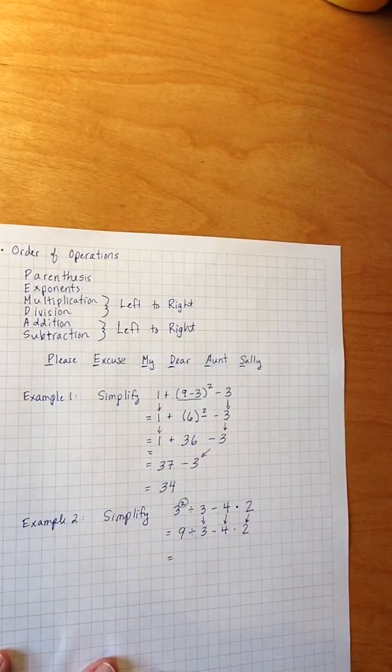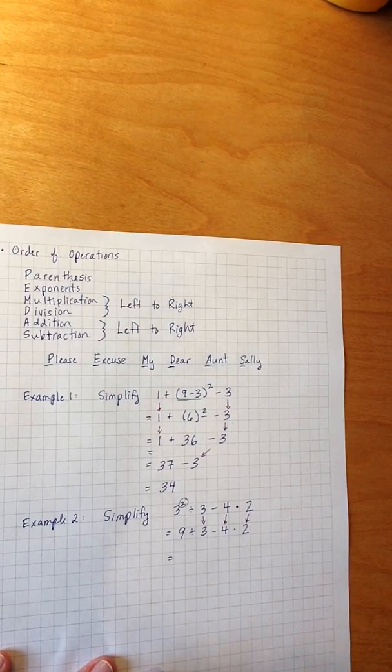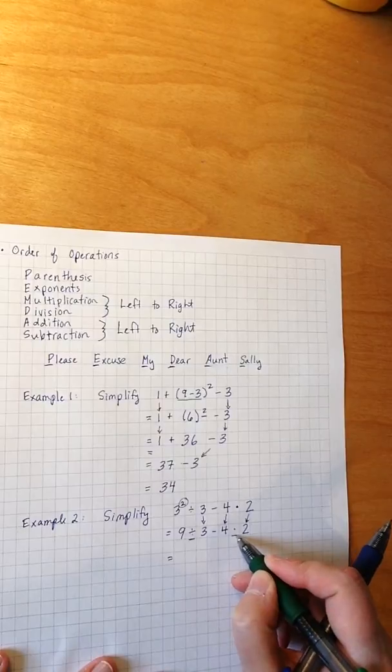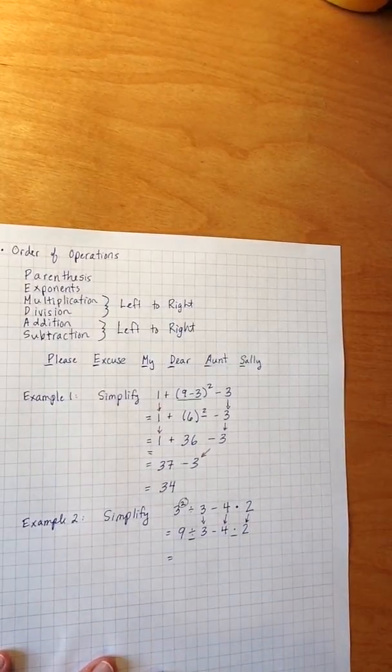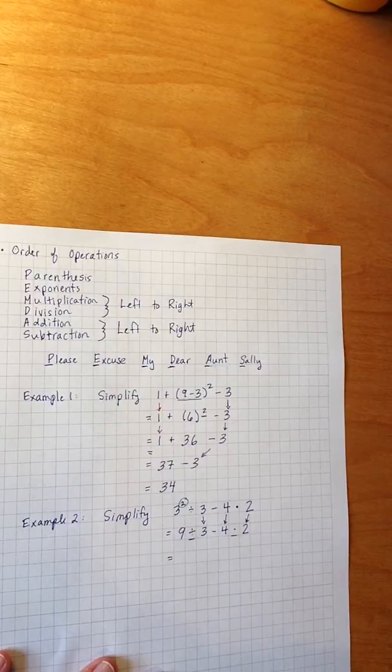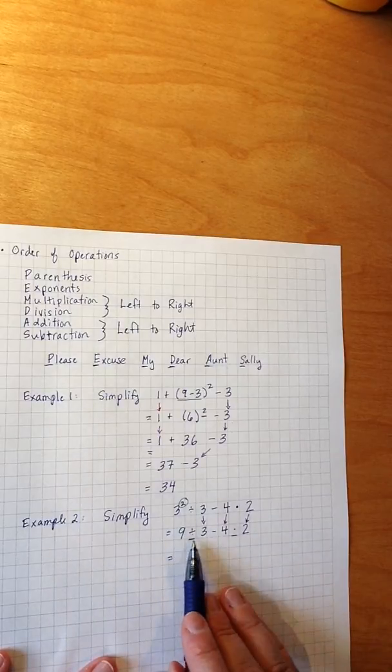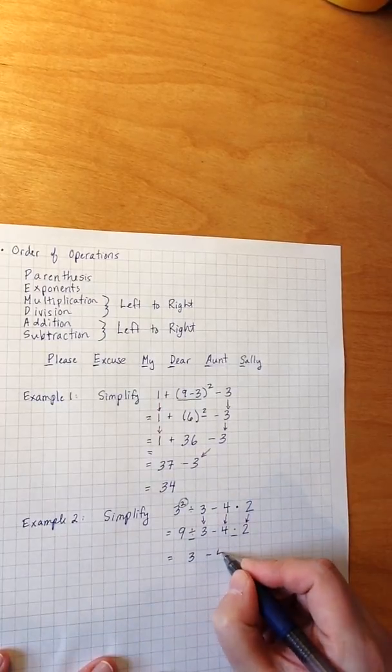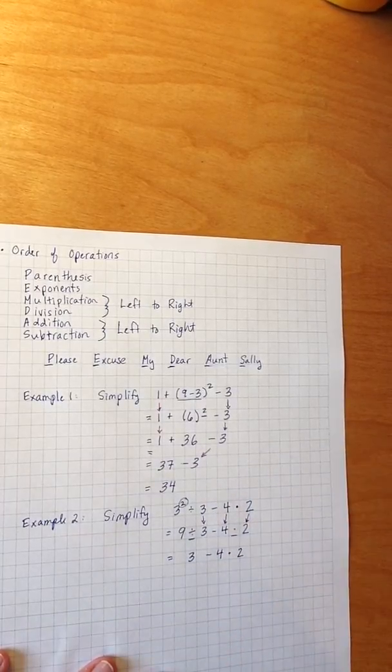Now I look at this problem and say, do I have any multiplication or division? I do. I have it in two spots. I have division happening right here and multiplication right here. So I'm going to work the problem again from left to right. The first division or multiplication is 9 divided by 3. That gets me 3. I still have my minus 4 and my times 2.